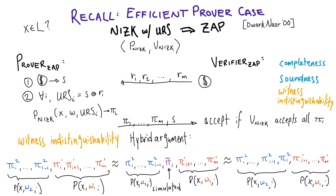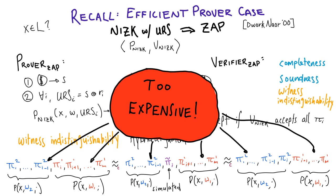One critical thing to note: because soundness is statistical, for this transformation to hold for NP without causing a collapse, it's essential that this indistinguishability argument is computational. So it's very important that this reduction is efficient. The problem with applying this to an inefficient prover is that generating the surrounding proofs to feed to the reduction is simply too expensive — we don't have time to sample the proofs ourselves.